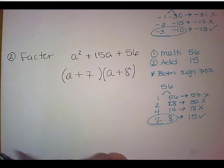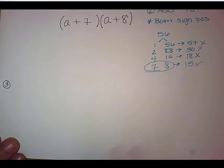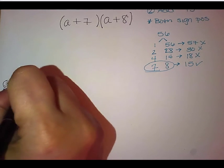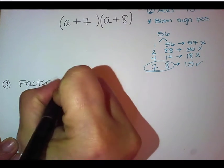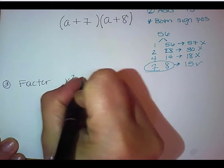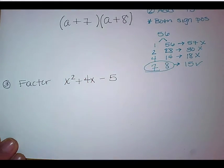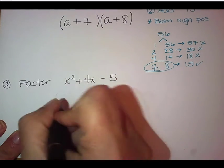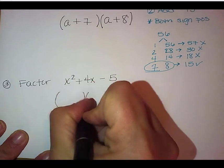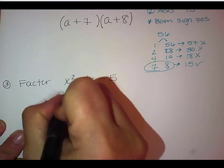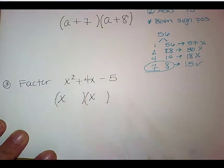All right. For our next example we've got going on here, we're going to factor x² plus 4x minus 5. So we're going to do our parentheses just like on our previous problems. We're going to lead off with that x on both of these guys.